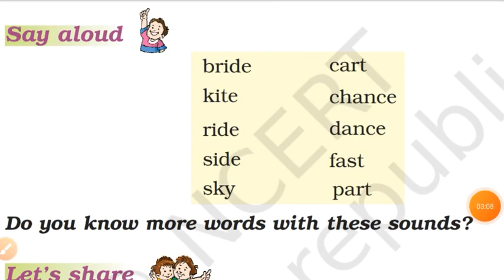Next, let's read rhyming words. Bride, kite, ride, side, sky. Next group: chance, dance. And: first, put.